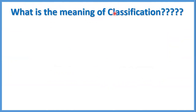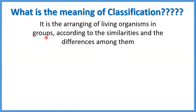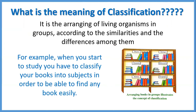What's the meaning of classification? زي ما عملنا كده في الكتب بتاعتنا قبل ما نذاكر، إن إحنا حطينا كل الكتب بتاعت كل سبجكت الوحدة. ده اللي إحنا بنعمله في الclassification بتاعت living organisms — بنعمل arrangement للliving organisms in groups according to the similarities and differences among them. نشوف الـsimilar living organisms بنحطهم مع بعض في groups، والdifferent بنحطهم في groups تانية. زي ما قلنا لما نبقى عايزين نعمل arrangement للكتب بنعمل لهم separation according to subjects، علشان يبقى سهل إن إحنا نطلع أي كتاب إحنا عايزينه.